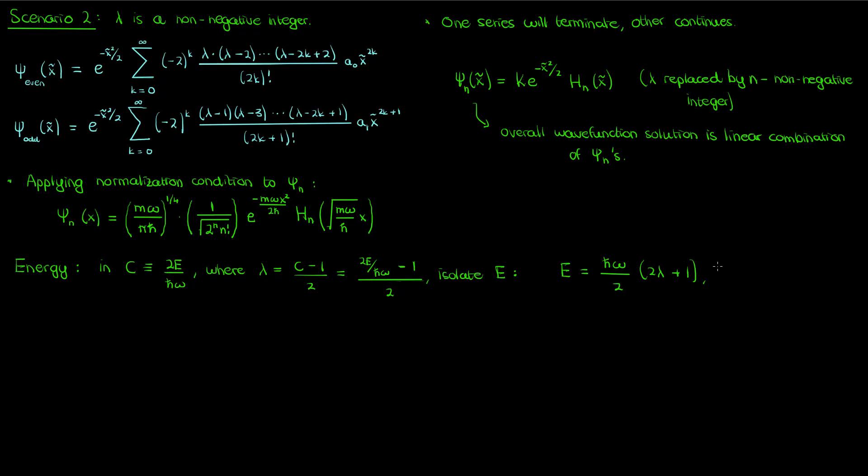Now I showed you earlier that the only permissible series solutions to the harmonic oscillator Schrödinger equation are the series solutions that terminate. The non-terminating series diverge and disobey the normalization condition. Therefore λ can only be a non-negative integer which I'll call n. So the energy cannot be continuous, the only energy values that are allowed are discrete values E_n which correspond to the integer n. Once again we've shown that energy is quantized.